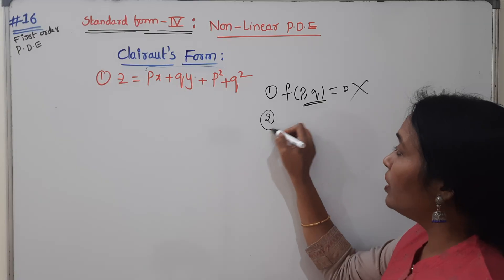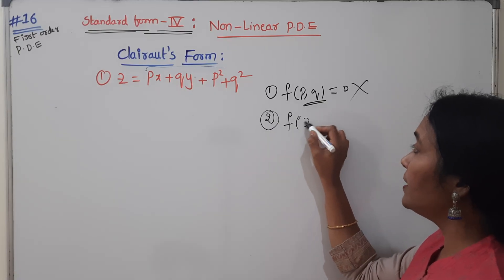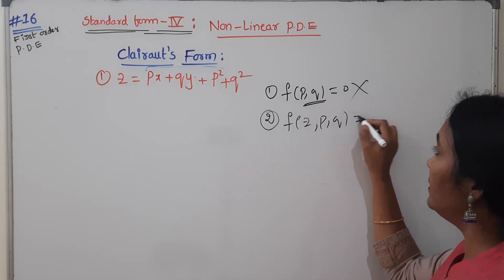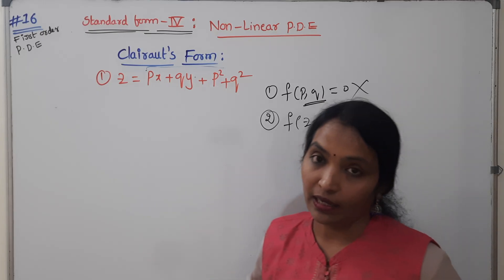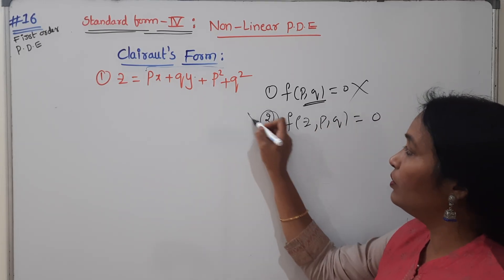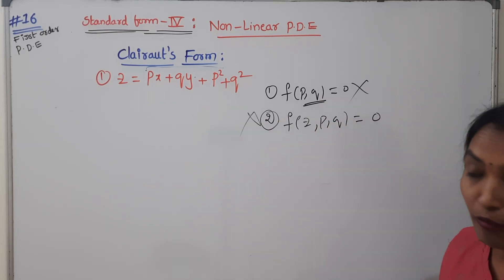What about second one? F of Z, PP QQ. Z, PP QQ is standard form, but here there is XYZ also, so this does not belong to form 2.